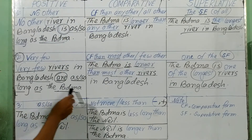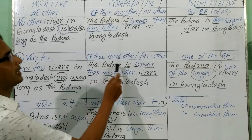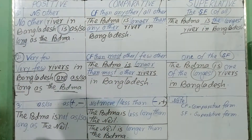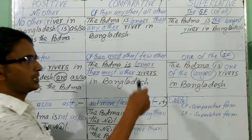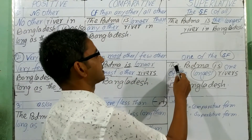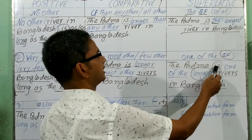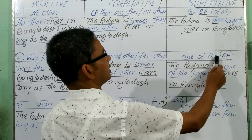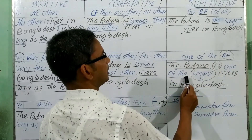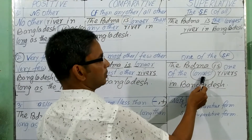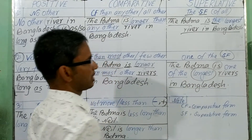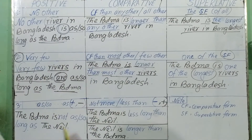Here you can see: 'The Padma is longer than most of the rivers in Bangladesh.' And at the time of changing to superlative form, you will have to write the subject 'the Padma,' then the singular form of the verb 'is,' then 'one of the,' then the superlative form of the adjective, then the rest of the portion of the sentence. Then you can do it easily.